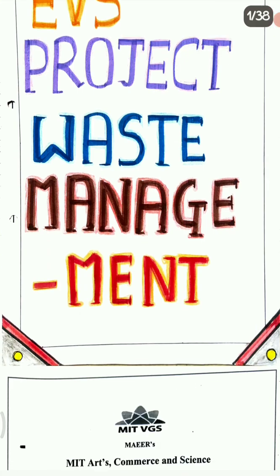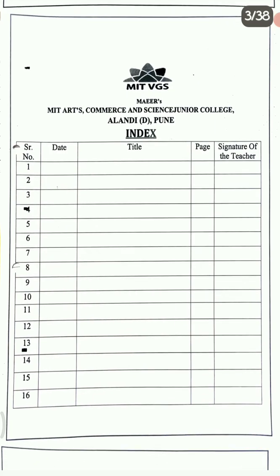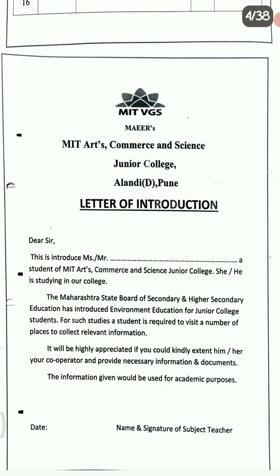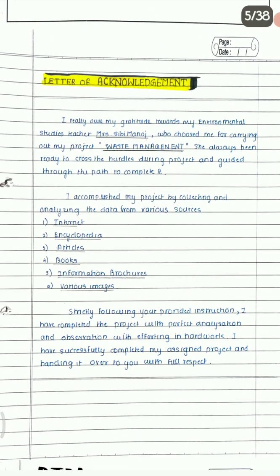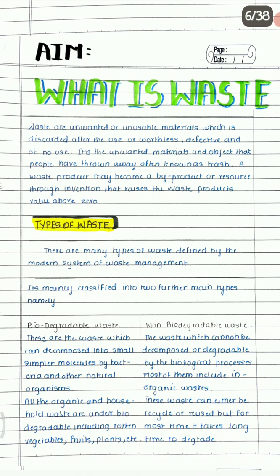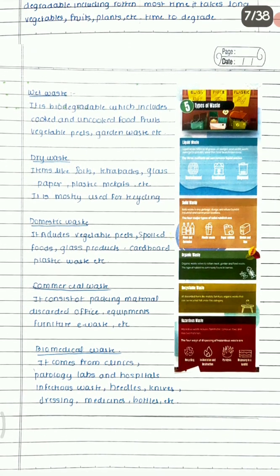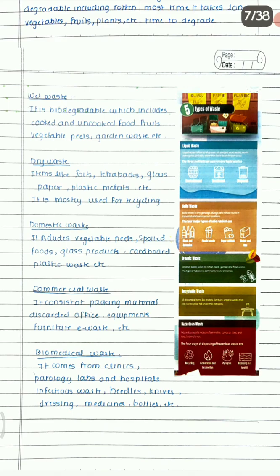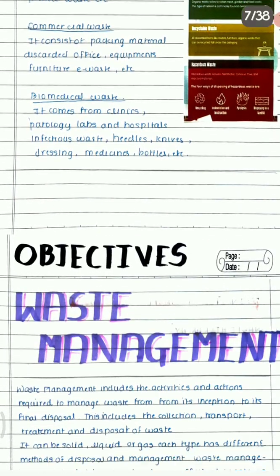After giving a good title for your project, you have to attach a certificate, then write an index, and a letter of introduction — which is actually a letter of acknowledgement written for your teacher. The very first thing when you start your project is to write the aim of your project.